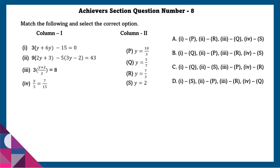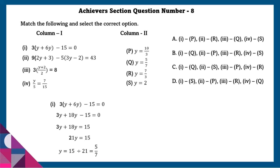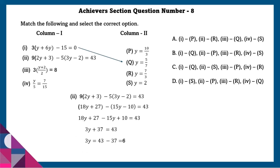Achiever section question number 8: Match the following and select the correct option. First: simplifying — since 3 is common, we get 3y plus 18y minus 15 equals 0, so 21y equals 15, giving y equals 5/7. Second: simplifying by bringing 9 inside gives 18y plus 27, and bringing 5 inside gives 15y minus 10 equals 43. Simplifying gives 3y equals 6, so y equals 2.